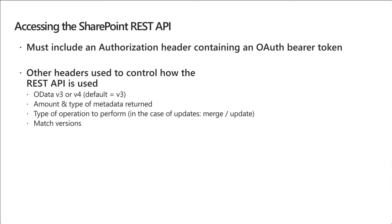There are other headers used to control how the REST API is being used. We can specify if we want OData v3, which is the default, or override that and use v4. We can also control the amount and type of metadata returned, and the type of operations we want to perform — as in updates where we may want to merge data and deletes. We can also tell the SharePoint REST API how it should handle conflicting versions when trying to update.